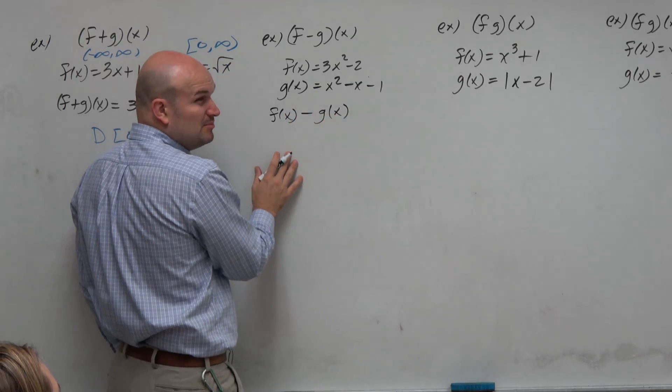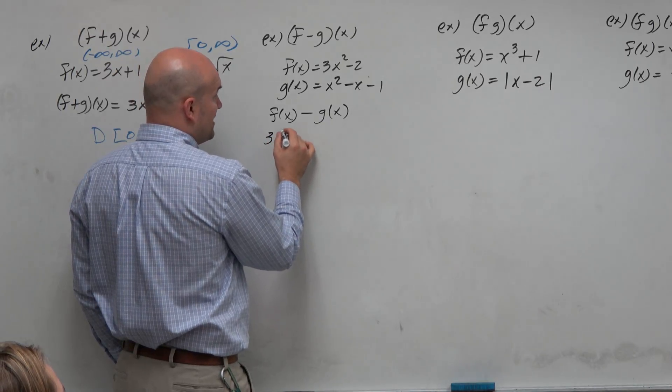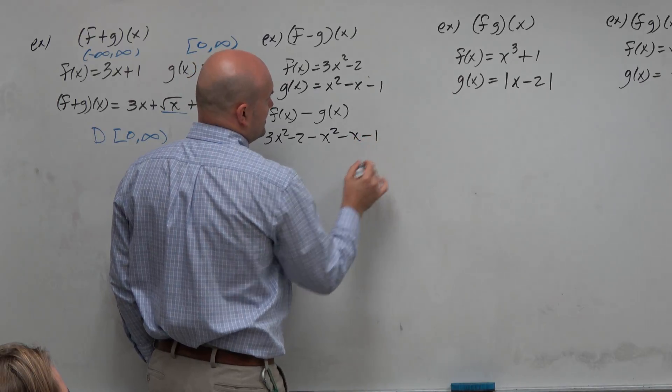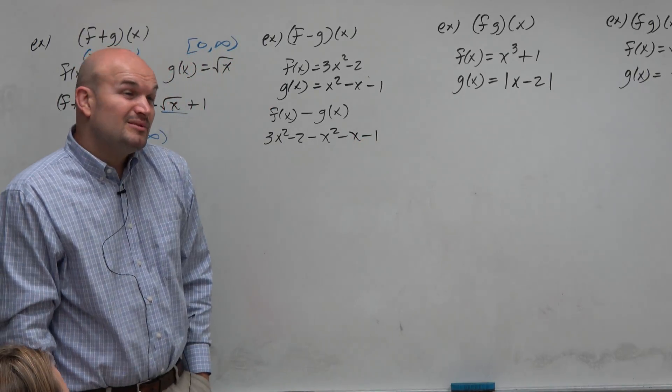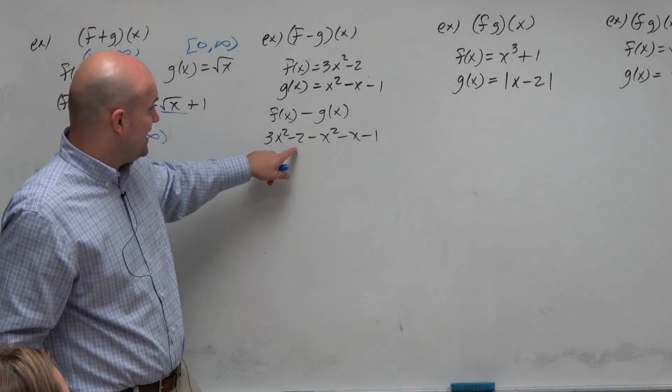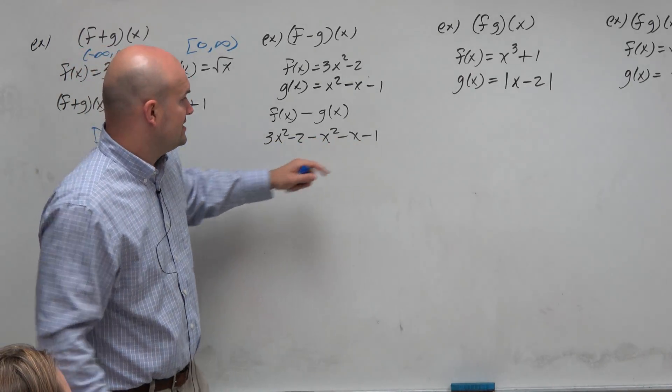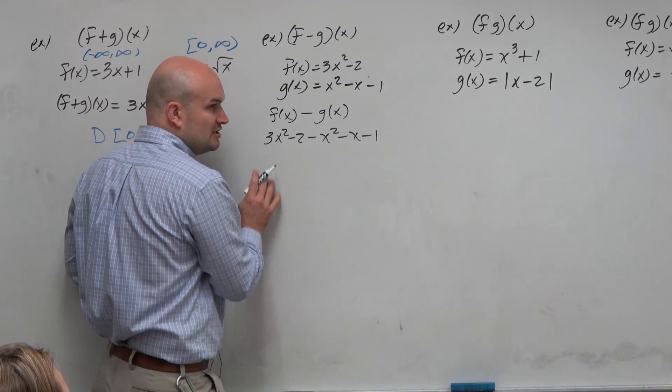Now, it's really important because here's where the mistakes happen. Students will take f of x, and then they'll take g of x, and they'll write it just like this and not even think about it. But the problem with this is this mathematically says negative 2 minus x squared, and then minus x minus 1. It doesn't say f of x minus g of x.